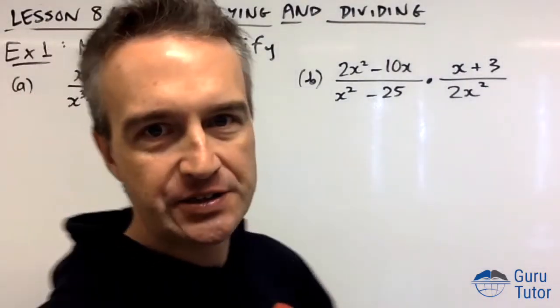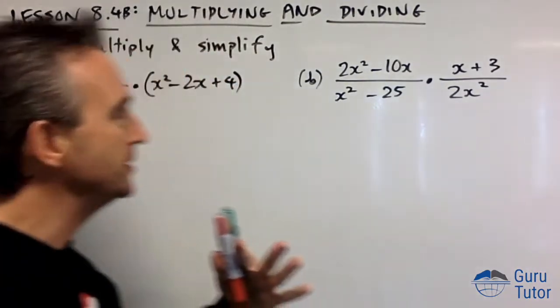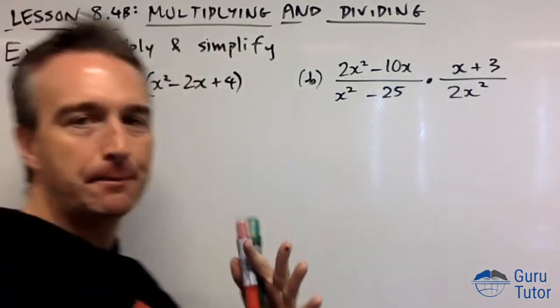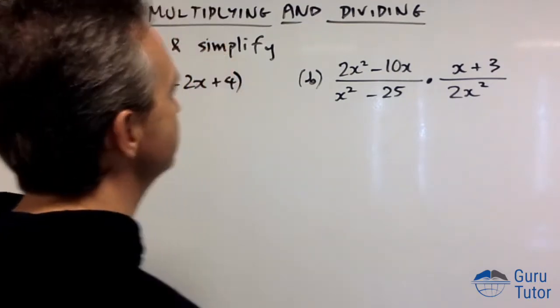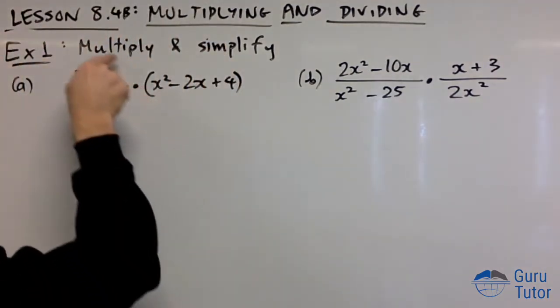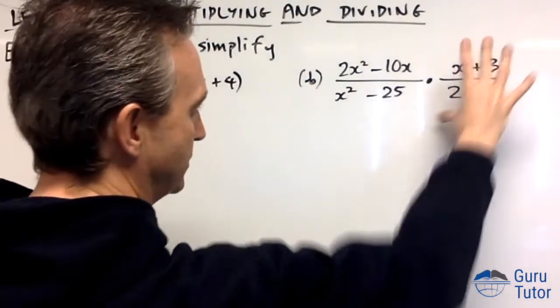We're still doing rational expressions, the polynomials inside the fractions. This time we're going to multiply and divide two or more rational expressions. Here we've got a rational expression times another rational expression, and we're simplifying them.